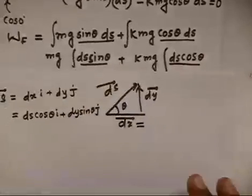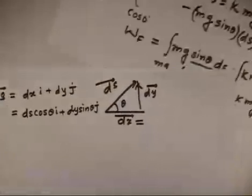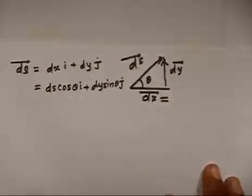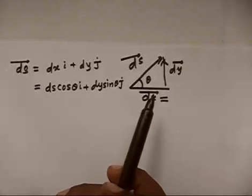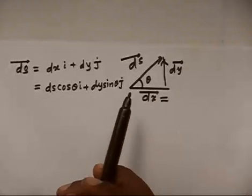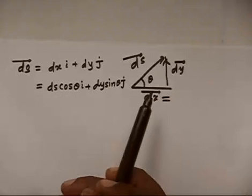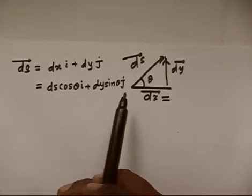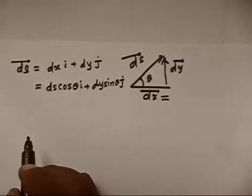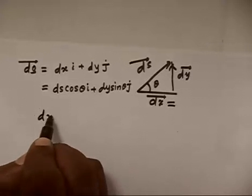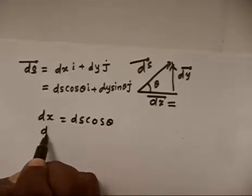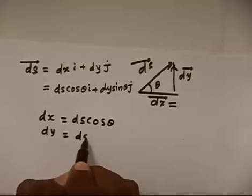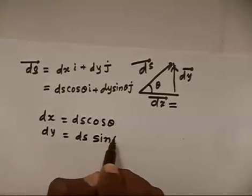If you see this diagram, we have said ds can be written as summation of dx i plus dy j and ds is nothing but ds cos theta and dy is nothing but dy sin theta. Now you can see dx is nothing but ds cos theta and dy is nothing but ds sin theta.